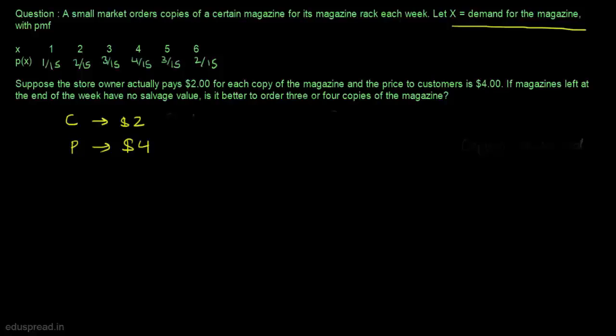We have to find whether it is better to order 3 or 4 copies of the magazine. The store owner is only concerned about the profit or net revenue. Since we don't exactly know the demand — we only have a probability mass function — we cannot calculate the exact net revenue. What we can calculate is the expected net revenue for 3 or 4 copies, and compare which value is greater.